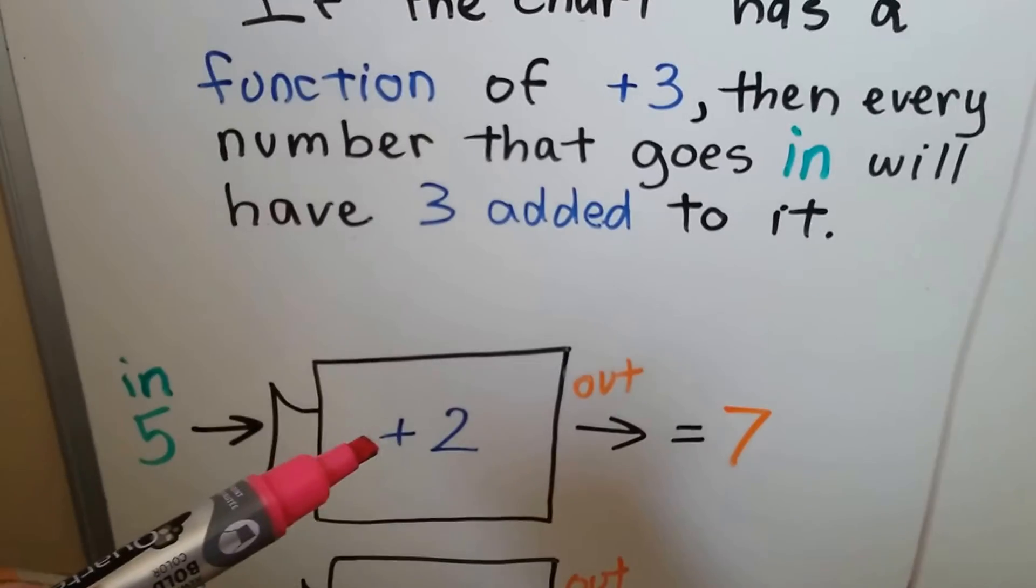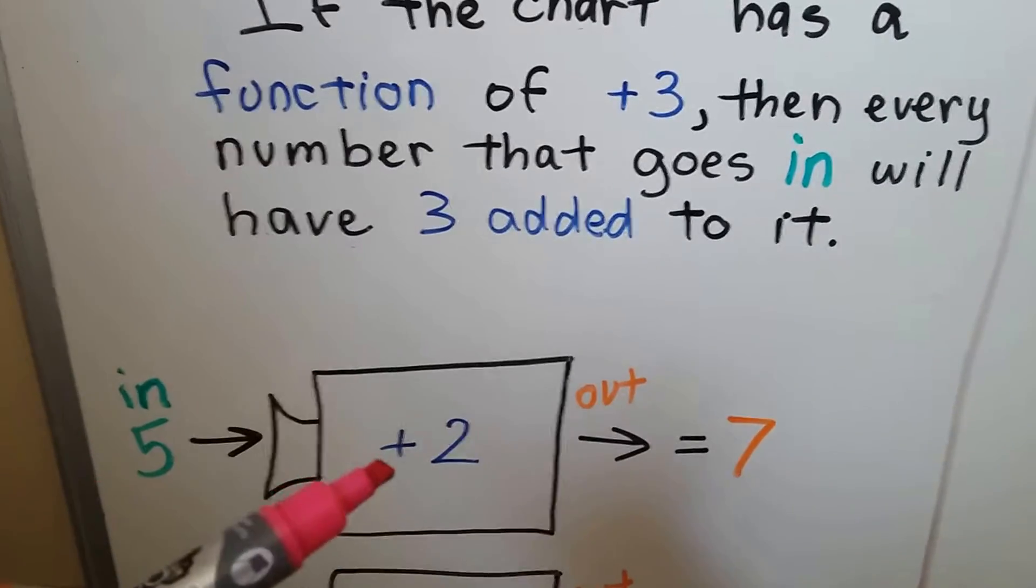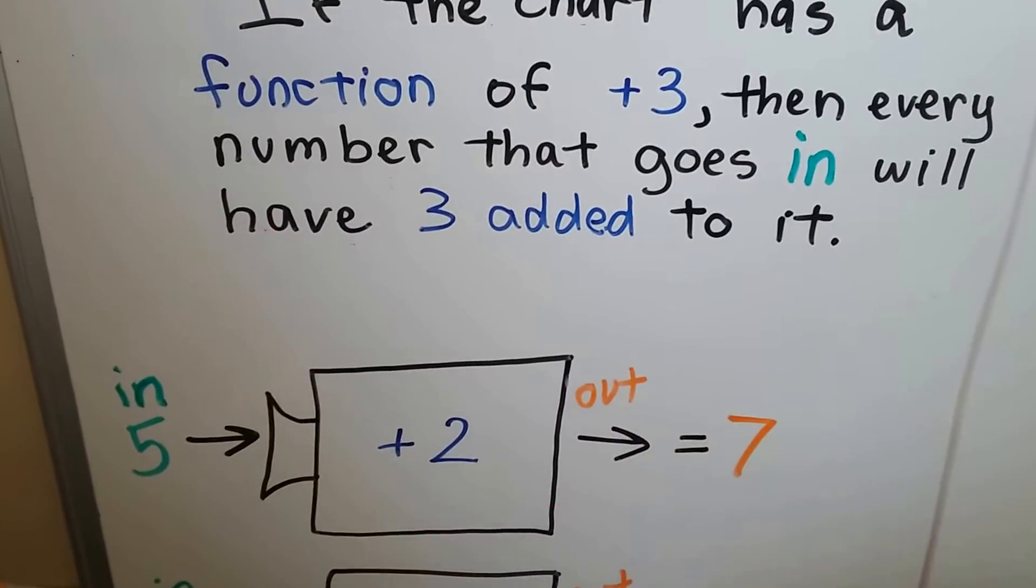If we put a 4 in, it'll have plus 2 added to it and come out as a 6. If we put a 10 in, it'll have 2 added to it and come out as a 12.